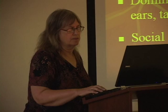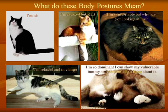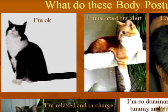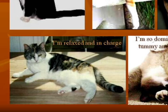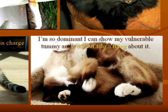Let's look at some body postures. What do these mean? 'I'm okay, I'm relaxed but I'm paying attention.' 'I'm comfortable, but why are you looking at me?' — the eyes are a little almond-shaped, the ears are very slightly sideways. 'I'm relaxed and in charge — I'm lying on my side with my head up, and I'm so dominant I can show my tummy and you can't do a thing about it.'